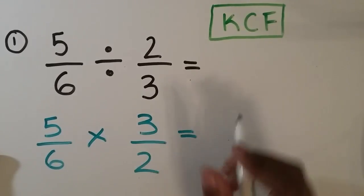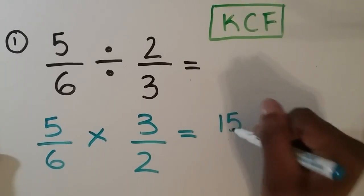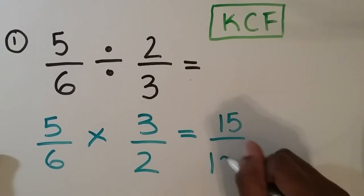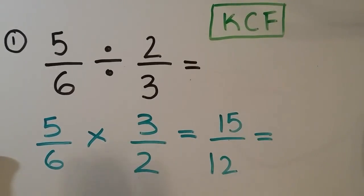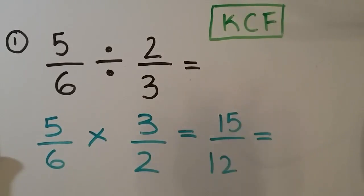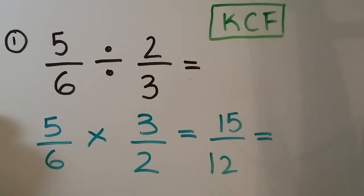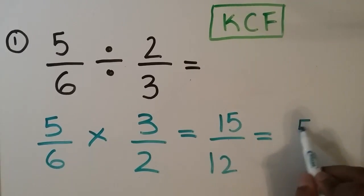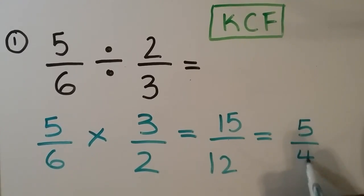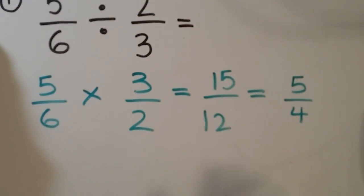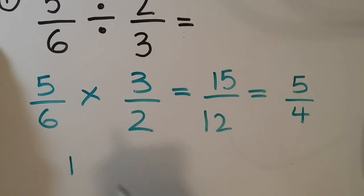And just multiply our numerators, and then multiply our denominators. And we get 15 over 12, and we want to simplify that. This can be rewritten as 5 over 4 if you want to leave it as an improper fraction, or 1 and 1 over 4, 1 and 1 fourths.